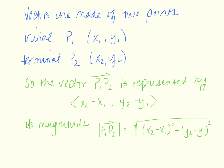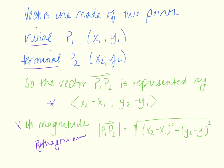Vectors can be made of two points. Given two points for a vector, we have an initial point P1 and a terminal point P2, written as (x1, y1) and (x2, y2). A vector between those two points is represented by the difference of the x-coordinates and the difference of the y-coordinates: x2 minus x1, y2 minus y1. Its magnitude comes from the Pythagorean theorem — it looks like the distance formula: the square root of (x2 minus x1) squared plus (y2 minus y1) squared.